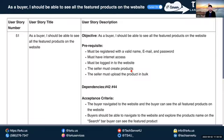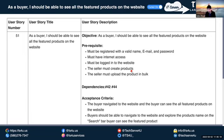Typically, the user story or requirement is given by the business — whoever is going to make the website. From the business side, we call this the functional requirements, or FRD (Functional Requirement Document), or SRS (System Requirement Specification). You will hear many different terms, but at the end of the day, it refers to the project requirements.